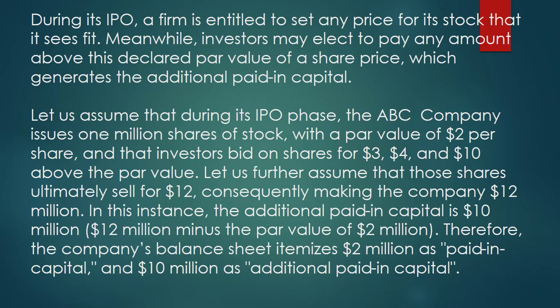In this instance, the additional paid-in capital is $10 million — that is $12 million minus the par value of $2 million. Therefore, the company's balance sheet itemizes $2 million as paid-in capital and $10 million as additional paid-in capital.